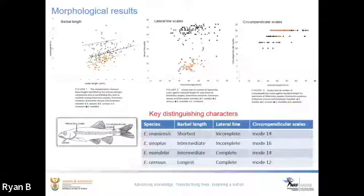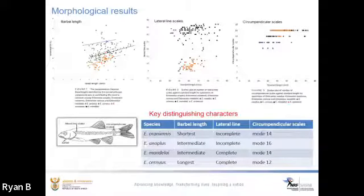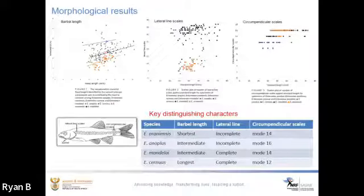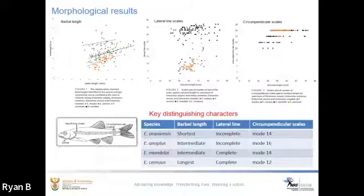Morphological findings agree with Bernard's 1943 separation of these species, with key distinguishing characters including differences in barbel length, number of predorsal lateral line scales, and circumventricular scales. Enteromius orionensis is readily separated from the other species by having a conspicuous purpose and an incomplete lateral line. Enteromius senuis has the longest barbel length, a complete lateral line, and the lowest number of circumventricular scales. Enteromius senoplas has an incomplete lateral line and relatively short barbels. Enteromius mandelai has a complete lateral line and relatively shorter barbels than Enteromius senuis.